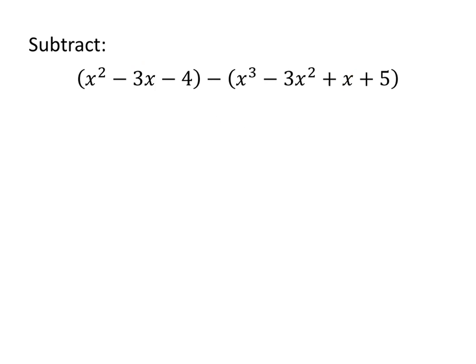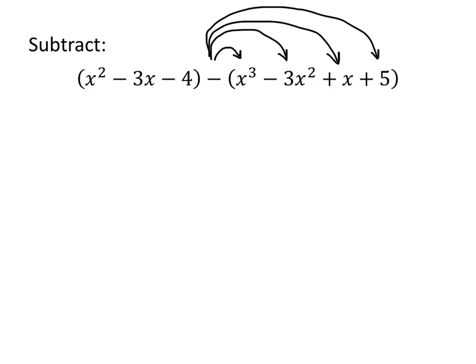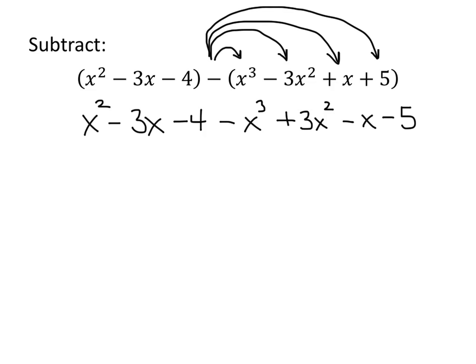Now, when we subtract polynomials, the first step is we want to take this negative sign and distribute it through all of the terms of that second polynomial. And once we do that, the subtraction problem just becomes an addition problem. So our first polynomial is still x squared minus 3x minus 4. And when we distribute that negative, we get minus x cubed, minus minus 3x squared is plus 3x squared, minus x, minus 5. And now, just like in the previous problem, we're just going to collect like terms.